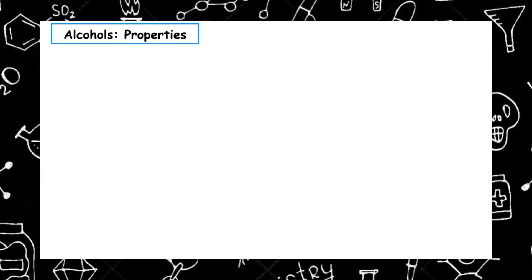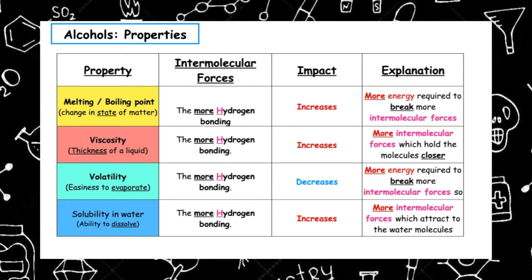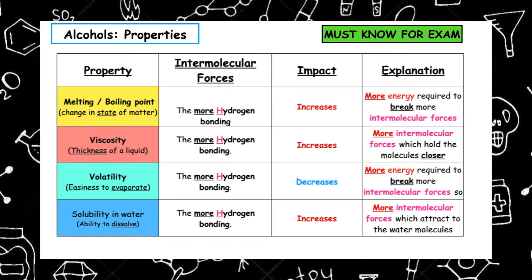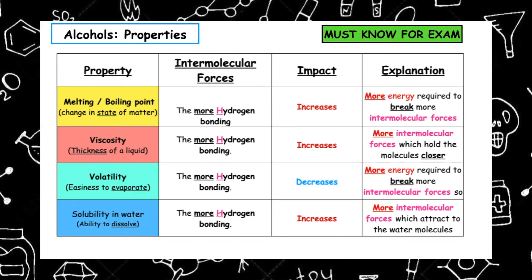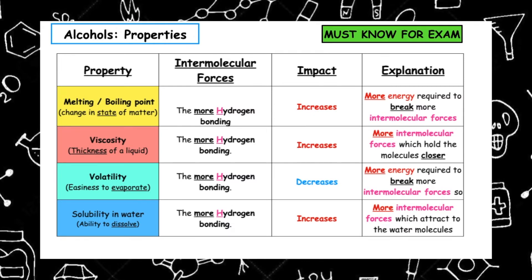Here is a summary of the four properties we need to know when comparing alcohols. We need to be able to identify the intermolecular force, the impact it has on that particular property, and explain that clearly. You will need to know this for your exam.